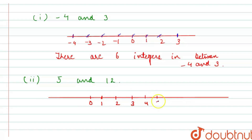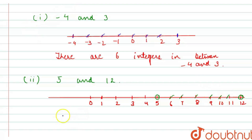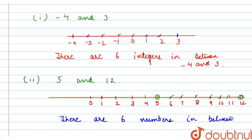I'm writing only positive numbers because we have to find for positive numbers. So it's 1, 2, 3, 4, 5, 6, 7, 8, 9, 10, 11 and 12. Now I have to find the numbers between 5 and 12. Let's count: 1, 2, 3, 4, 5, 6. Again, there are 6 numbers in between 5 and 12.